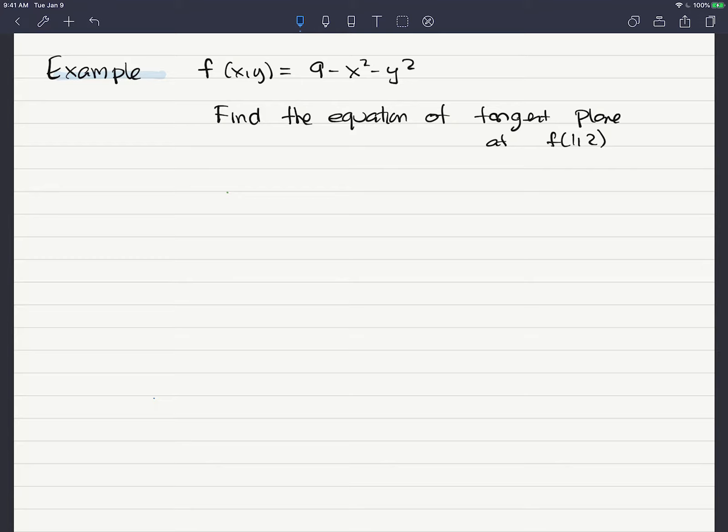So the form of the tangent plane is this: z minus z₀ equals the partial of f with respect to x evaluated at the point that you're standing on, times x minus x₀...